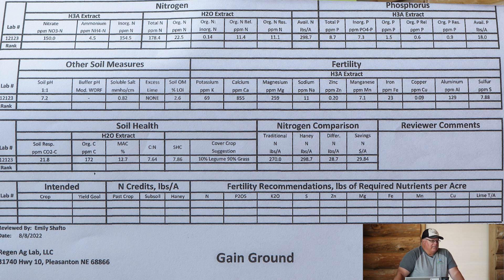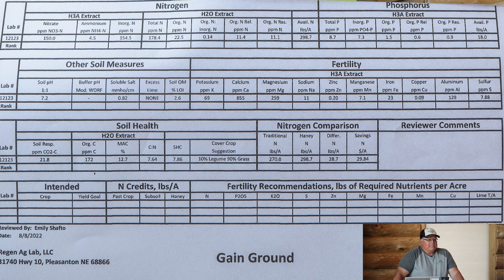Now, I want to tell you the difference in these two fields. Both fields have a growing crop that will be harvested any minute. If you saw a soil test with 150 parts per million of nitrate nitrogen headed into fall, what would you do? Plant something immediately, because chances are you're going to lose that by spring.